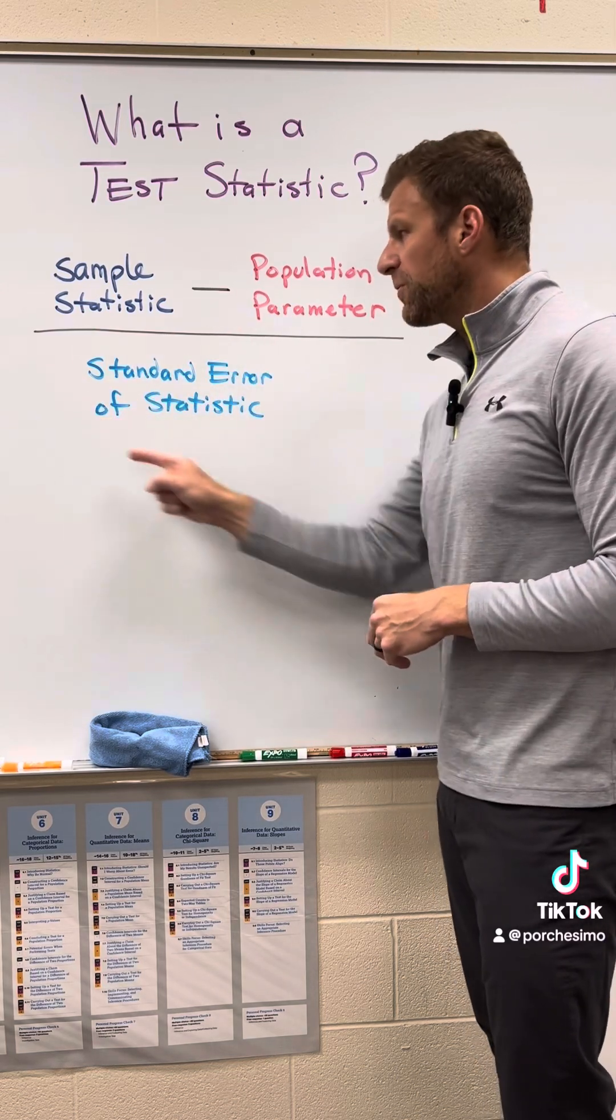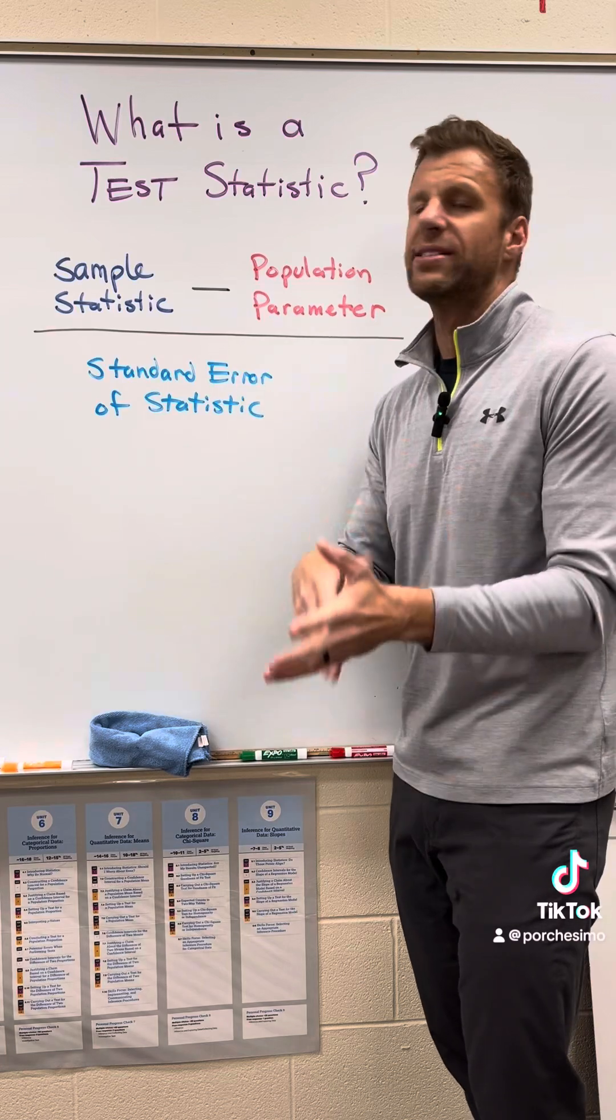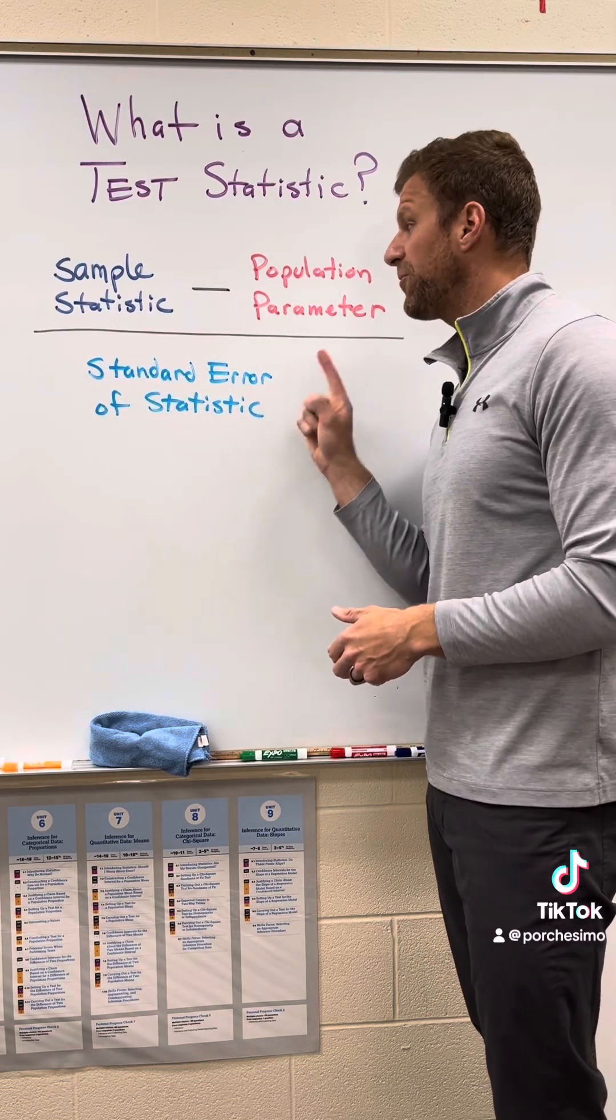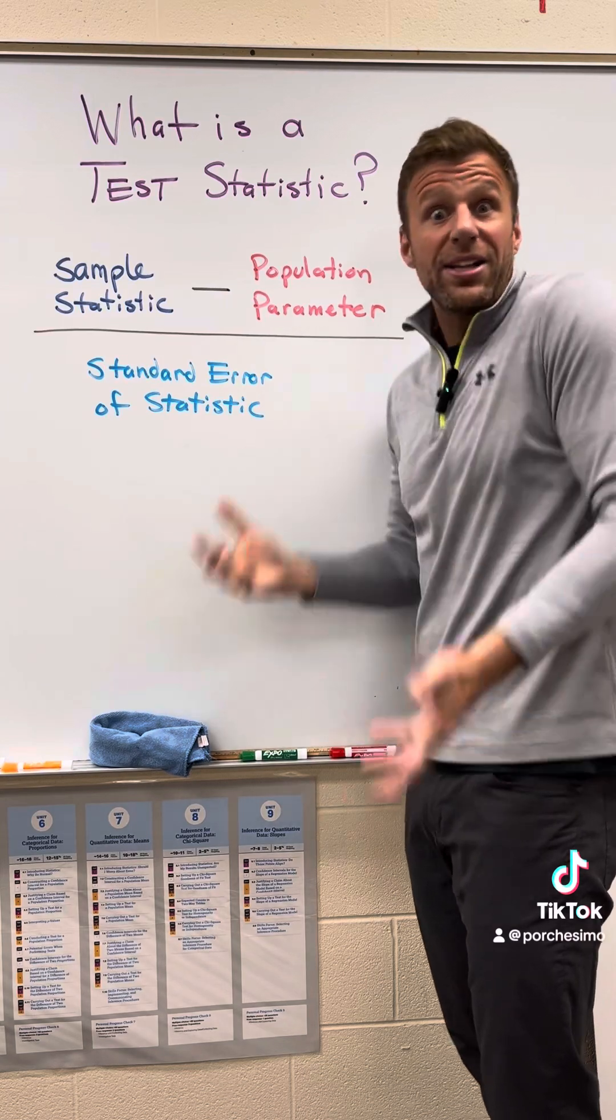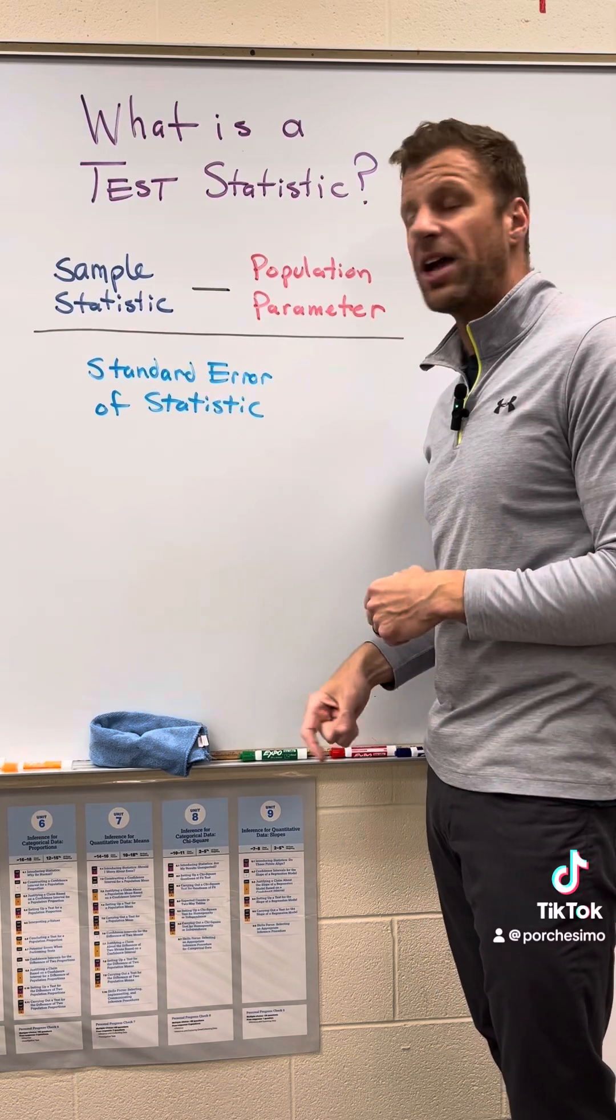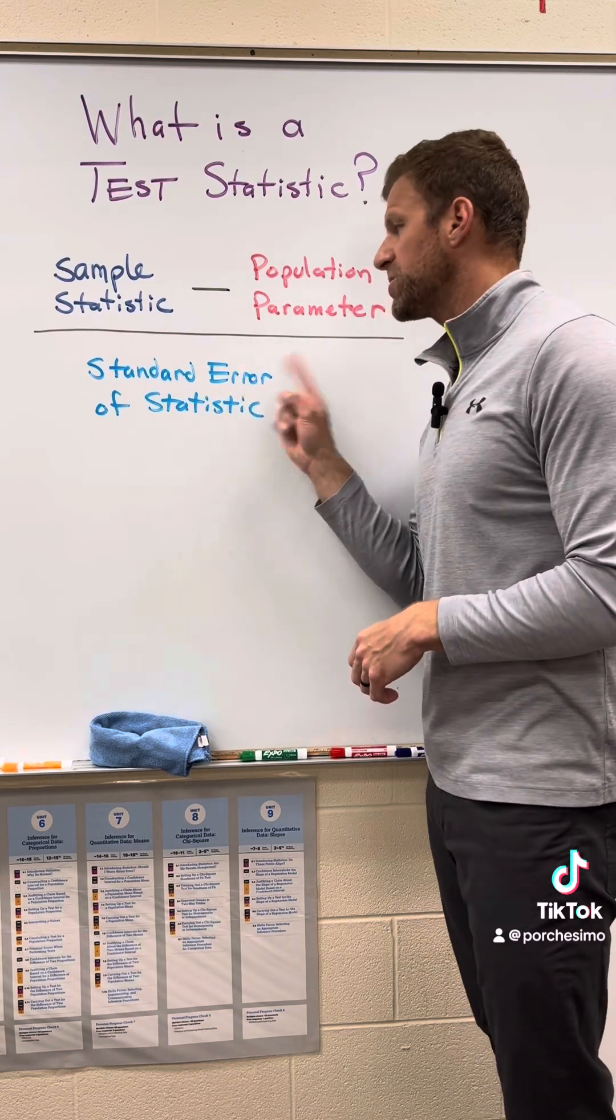Now there are multiple different formulas for this, whether you're working with proportions, means, one sample, two samples, or even slope. So how do you figure out the formula that you need for the standard error of your statistic? Well, it's on the AP Stats formula sheet. All you have to do is look at the back of the formula sheet, that second page.